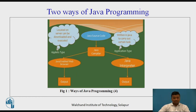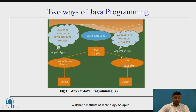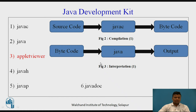Now entering the second section — the two ways of Java programming. The Java source code is at the top; we compile the program. Java programming is a two-stage process: compilation using the Java compiler (javac). There are two types of applications — applet type and application type. For the applet type we use a web browser; for the application type there is interpretation, after which we get the output.